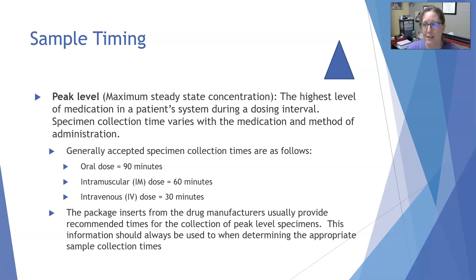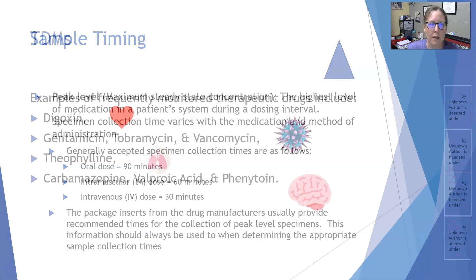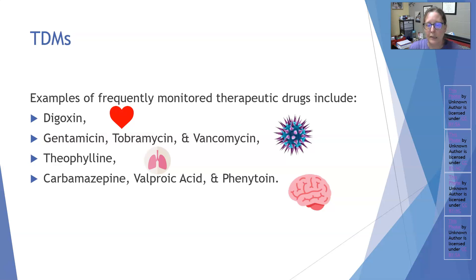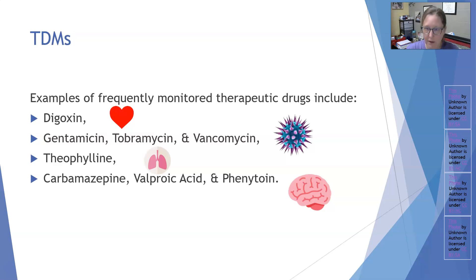Examples of drugs monitored with TDM include: digoxin (a heart medication); gentamicin, tobramycin, and vancomycin (antibiotics); theophylline (a bronchodilator used to open airways); and carbamazepine, valproic acid, and phenytoin (anti-seizure drugs). These are the most frequently ordered, though there are more. Knowing these covers the basic ones. That wraps it up — thank you so much.